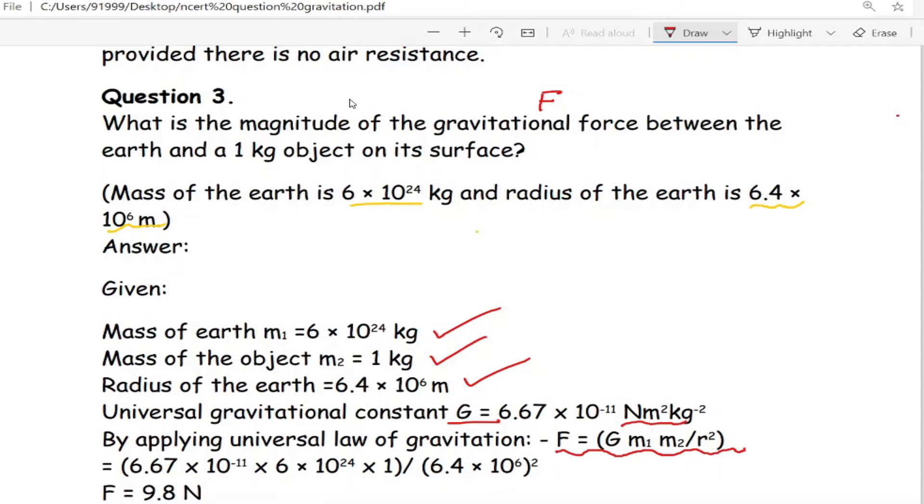We know all these values, so we are just substituting all these values into this equation. G is 6.67 × 10⁻¹¹. Then m₁ = 6 × 10²⁴. Then m₂ = 1 kg. Then radius of the earth is 6.4 × 10⁶ whole square.